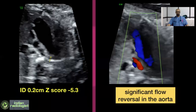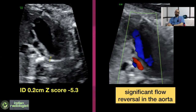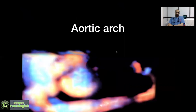In the 3-VT view, the isthmus diameter is 0.2 centimeters with a Z-score of minus 5. We can also see significant flow reversal in the aorta, again implying the possibility of coarctation. When we see the aortic arch, we can see the narrow isthmus.